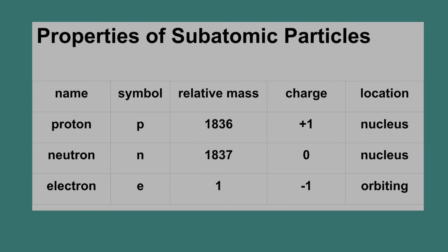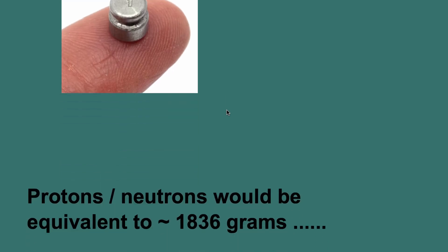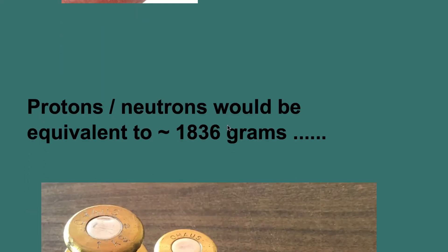So one way of demonstrating it is by using an actual gram. So if you have your mass sets in your classroom, there is a small tiny mass that's one gram. So if we were to say let's use that for the mass of an electron, then what that would mean is for a proton or a neutron, it would have to be equivalent to about 1836 grams.